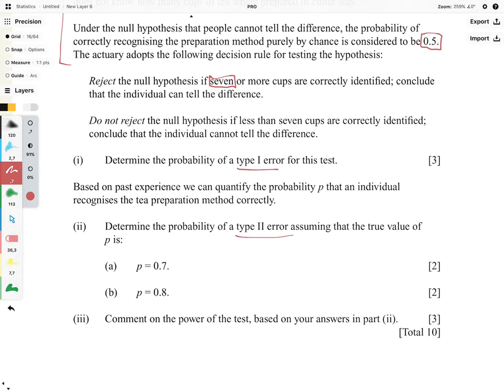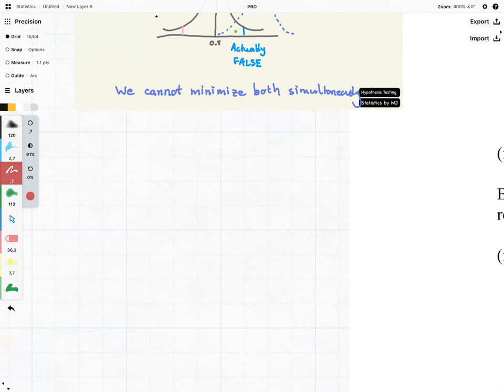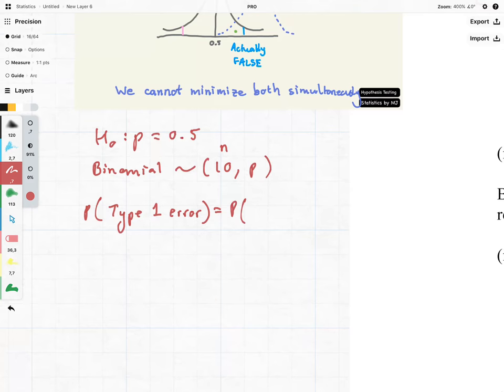With that in mind, let's look at here. Determine the probability of a Type I error for this test. Let's start writing this out. We have our null hypothesis H0, our p is equal to 0.5. Once again, we're dealing with the binomial distribution. We have a binomial in the sense of 10 as our n and our p which is what's under consideration. So the probability of a Type I error is as follows. It is going to be the probability that we reject H0 given H0 is correct.